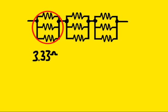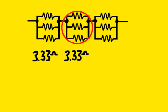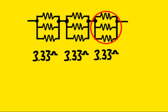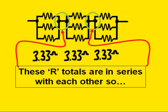That is the resistance total for this set. And the next set is the same, 3.33 ohms. Likewise, the last set. These resistance totals are in series with each other.